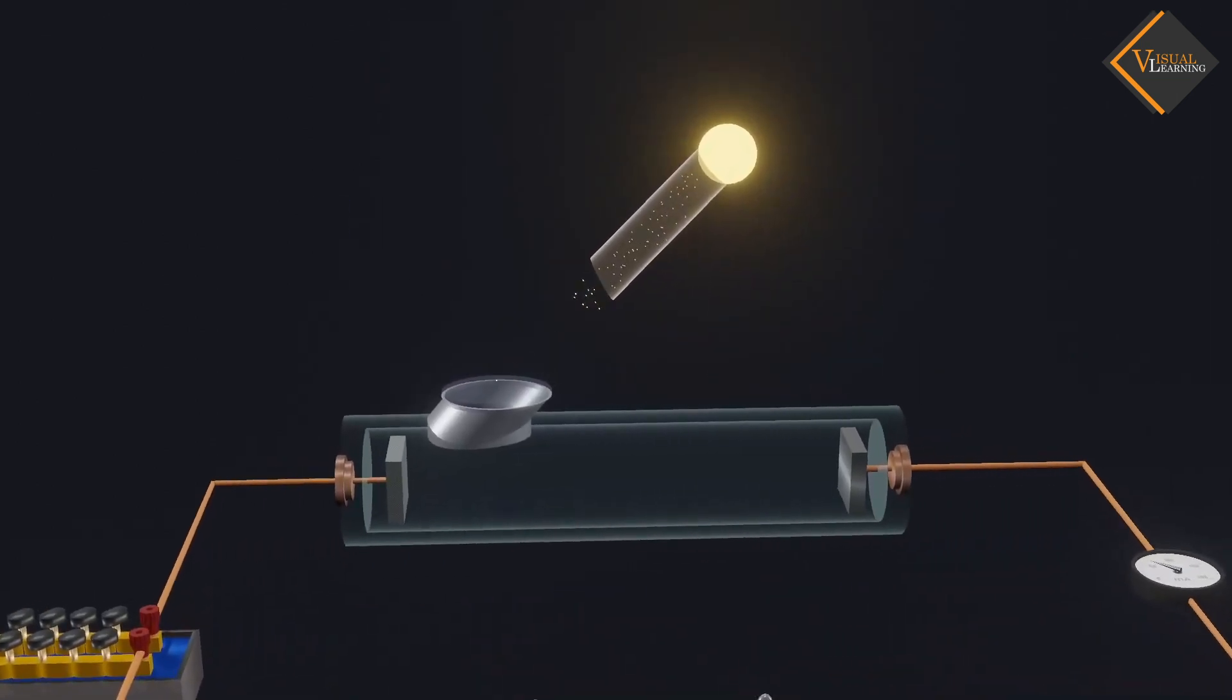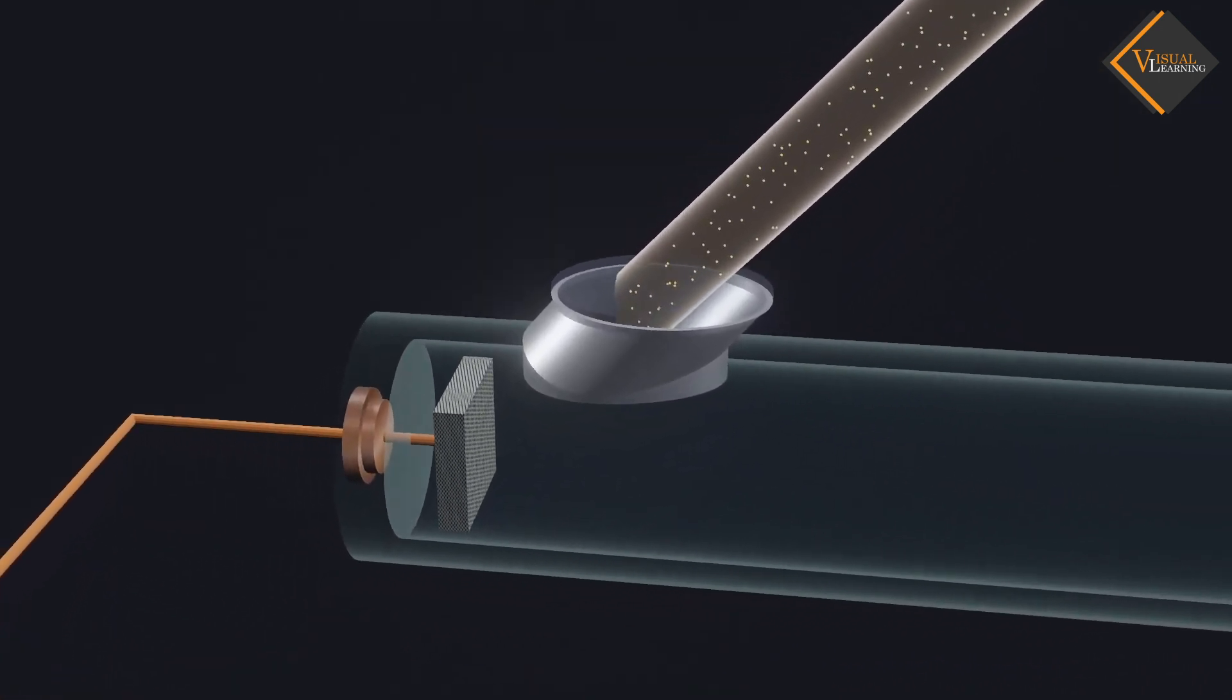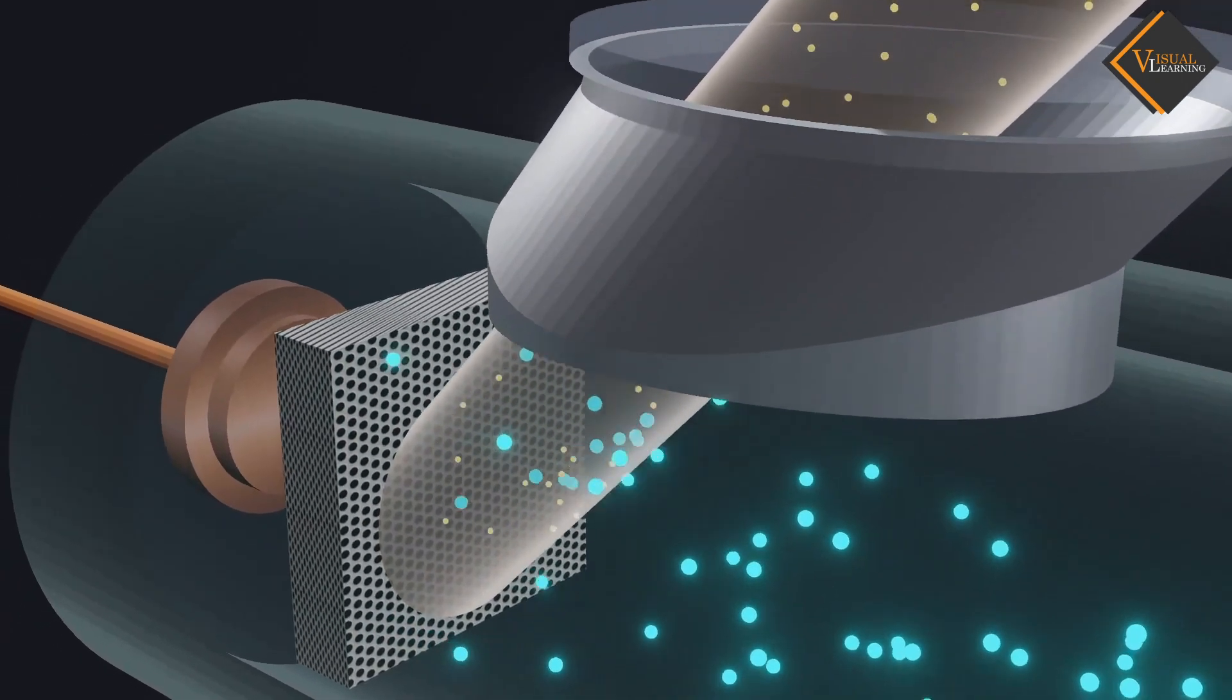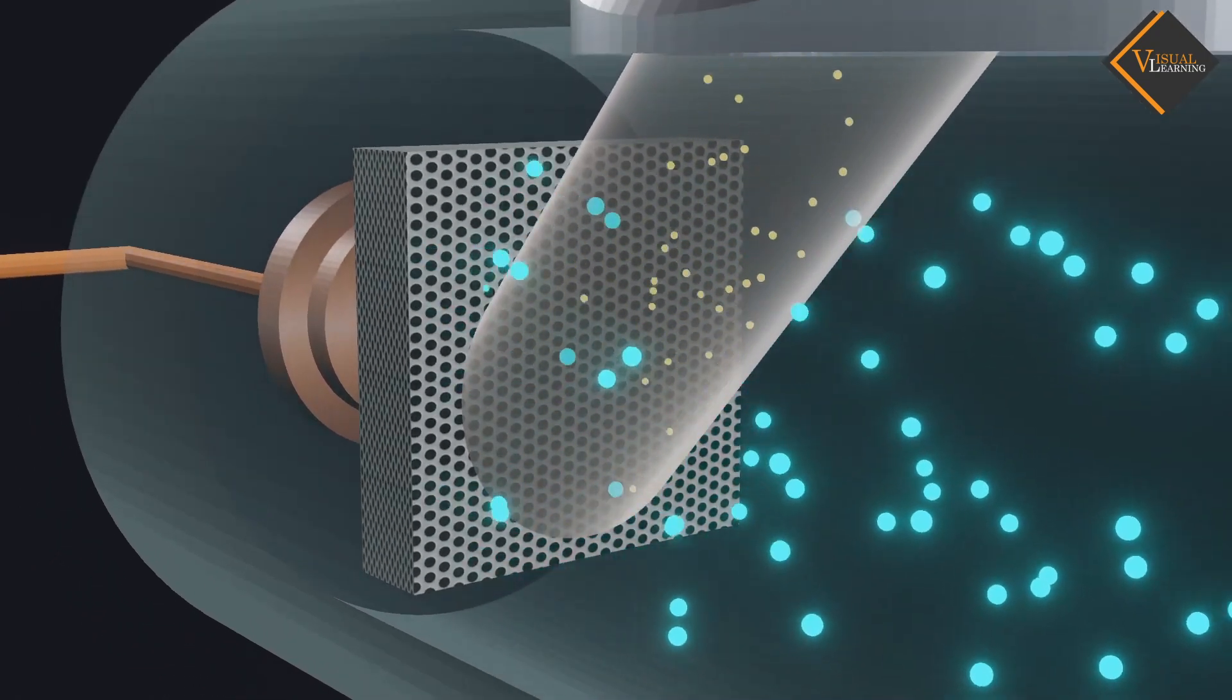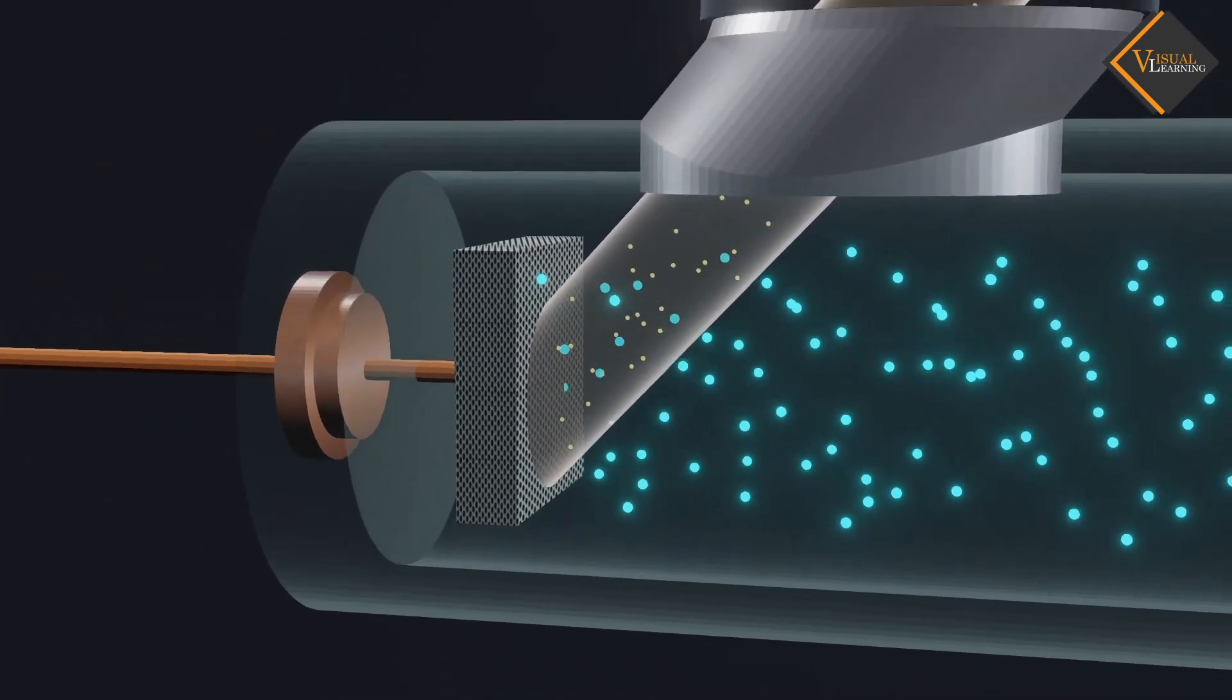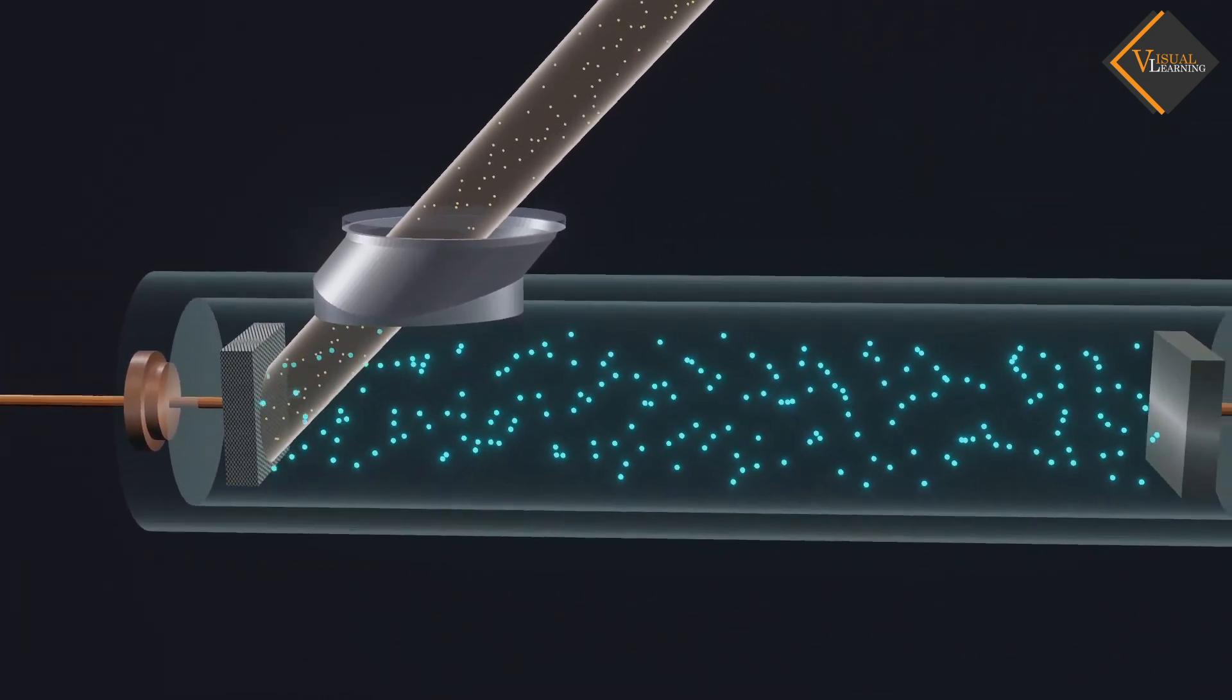Monochromatic radiation from a light source falls on the photosensitive plate after being filtered through the transparent window. As soon as the radiation falls on the photosensitive plate, electrons start to emit from the plate. These electrons accelerate towards the metal plate and start flowing in the outer circuit.